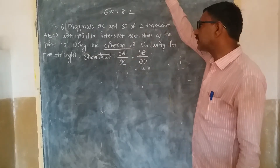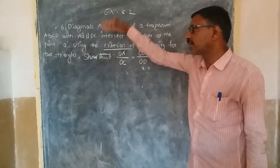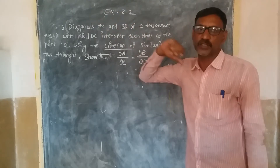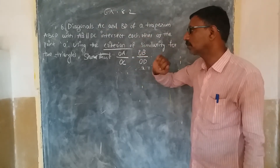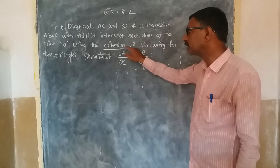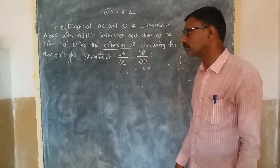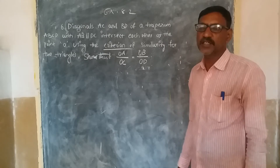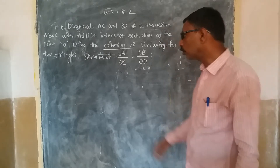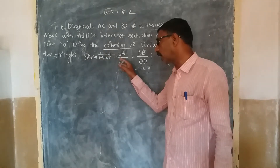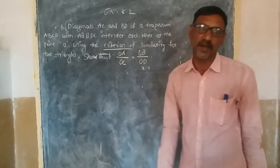The diagonals AC and BD of trapezium ABCD, where AB is parallel to CD, intersect each other at O. By using the criterion of similar triangles, prove that OA by OC is equal to OB by OD.